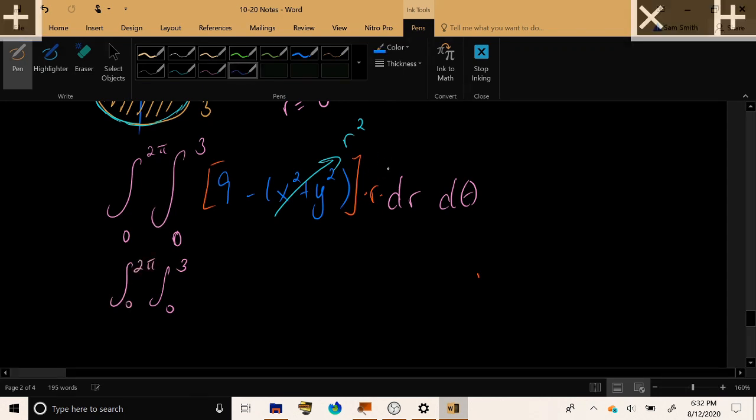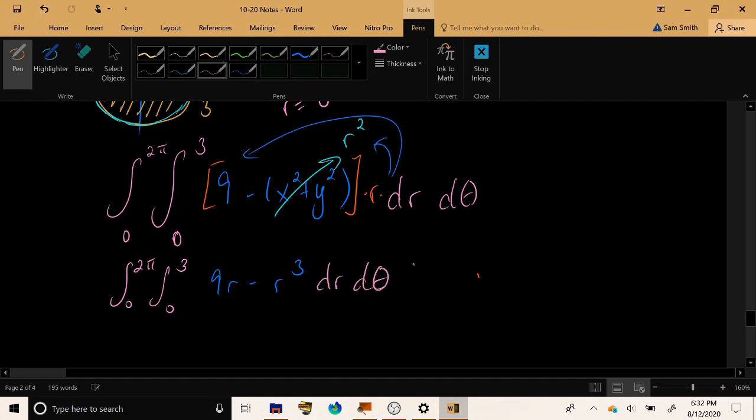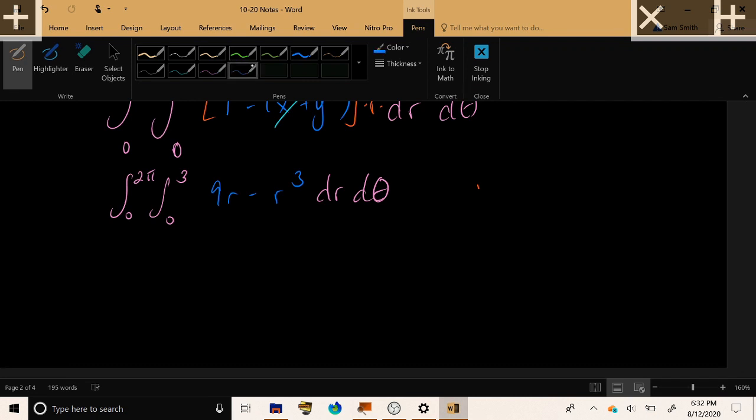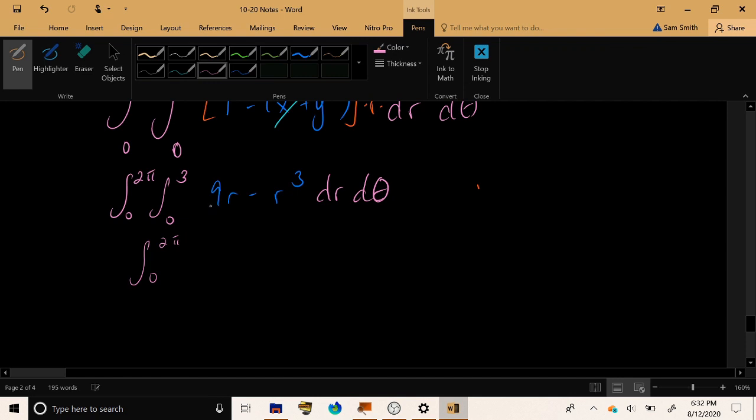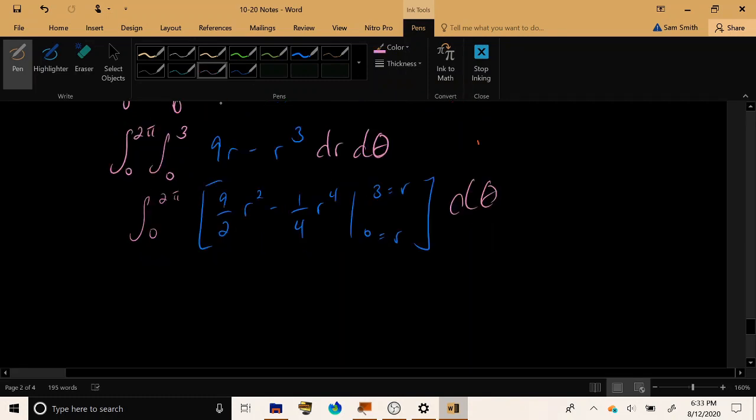Beginning by distributing and simplifying, 9r minus r cubed. Now let's integrate this quantity with respect to r, treating the outer variable theta as the constant. We have the integral from 0 to 2 pi. We have 9 over 2 r squared, we have 1 fourth r to the fourth power, evaluated from 0 to 3. Plugging in r equals 0 will cause each of these terms to vanish. So let's plug in r equals 3.